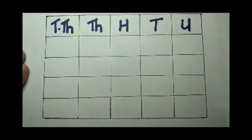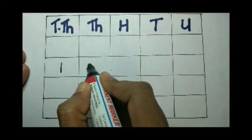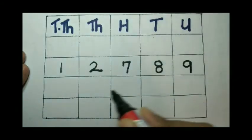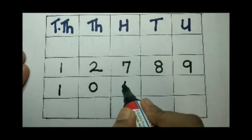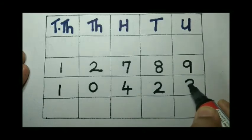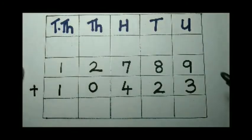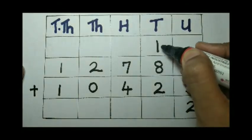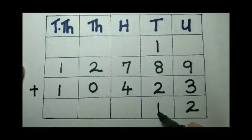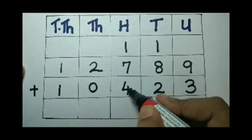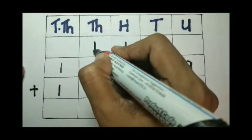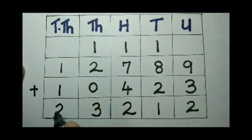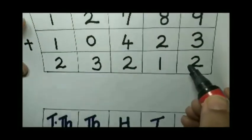Now we begin with the method. We write the number of mango saplings: 12,789, and teak saplings: 10,423. We add to find their sum. 9 plus 3 is 12, carry over 1. 8 plus 2 plus 1 is 11, carry over 1. 7 plus 4 plus 1 is 12, carry over 1. 2 plus 0 plus 1 is 3. 1 plus 1 is 2. So 23,212 is the sum of mango and teak saplings.